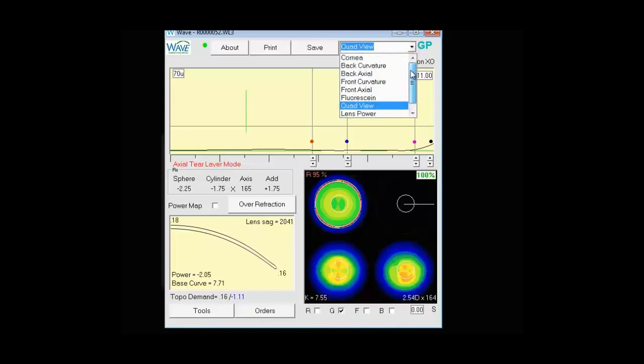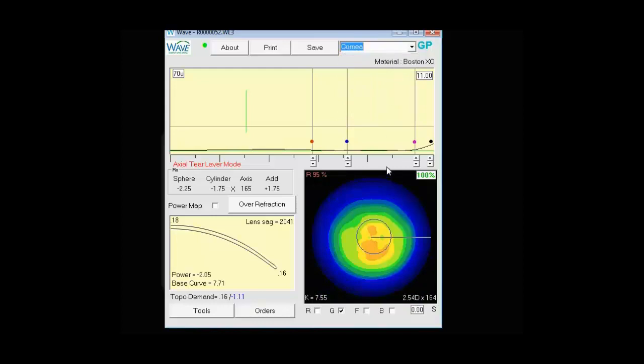If you use the drop-down, you can see you can get more specific if you want to see a larger view of the imported cornea. Back curvature, back axial, front curvature, front axial.